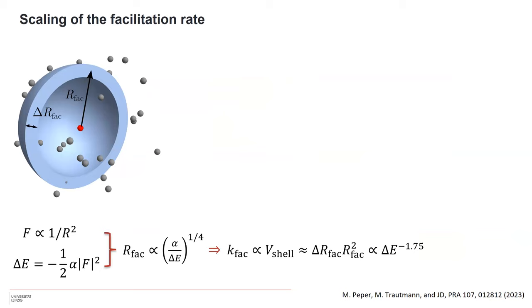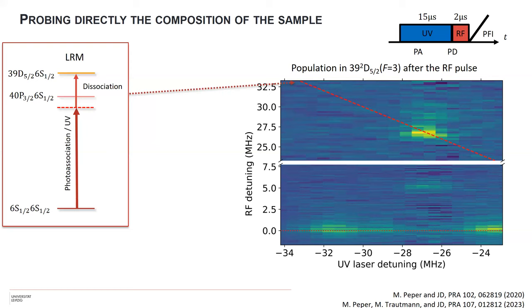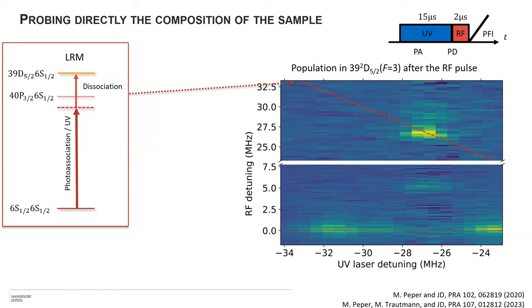The facilitation rate should be just proportional to the volume of this shell, assuming homogeneous density. Then we get the scaling with roughly one over the binding energy squared. Indeed, from the extracted rates from our rate model, we see that for these two different states they follow this trend very nicely. This facilitation rate scales with the 16th power of the principal quantum number because the polarizability scales with the seventh power and the binding energy with the inverse sixth power. If you do experiments with highly excited long-range Rydberg molecules, this can become a very important process.